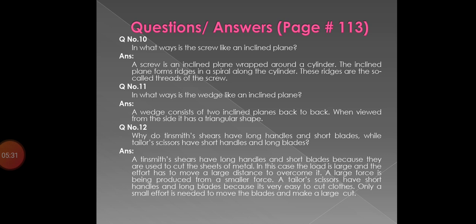Question number 11. In what ways is the wedge like an inclined plane? Answer: a wedge consists of two inclined planes back to back. When viewed from the side, it has a triangular shape.